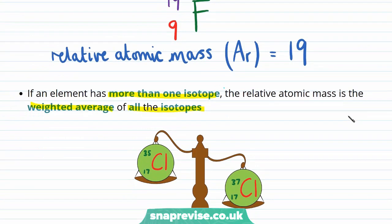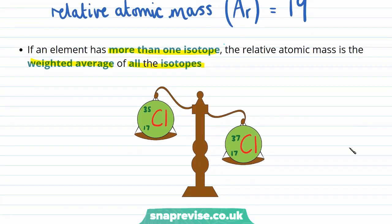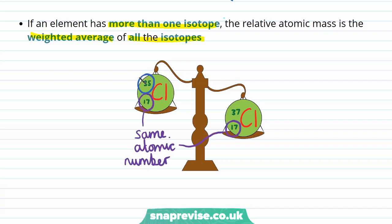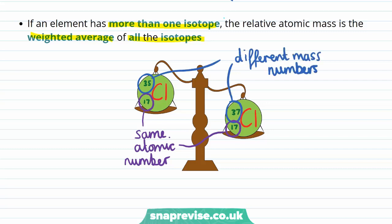To see what we mean, let's look at an example. Chlorine is an example of an element that exists in more than one isotope, and you can see the nuclear symbols for the two different isotopes in this diagram. Because both isotopes are chlorine, they both have the same chemical symbol, Cl, and the same atomic number, 17. However, what is different between the two isotopes is the number of neutrons, and therefore the mass number. For chlorine, we find that 75% of all chlorine atoms are the isotope on the left-hand side with a mass number of 35, and the remaining 25% of chlorine atoms are the isotope on the right with a mass number of 37.